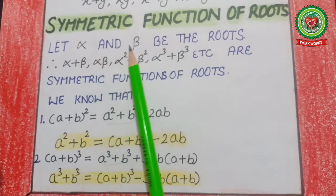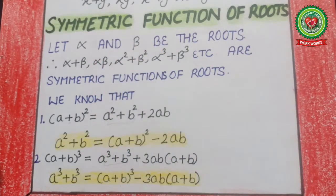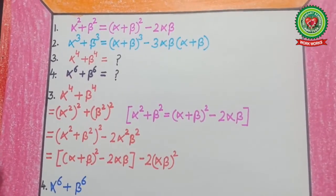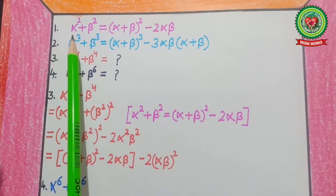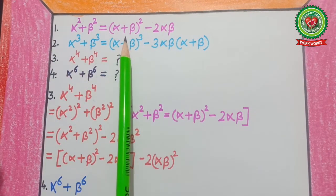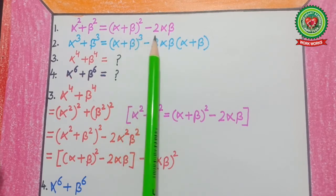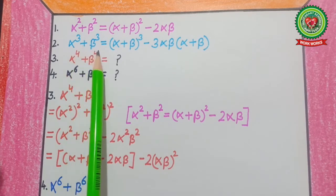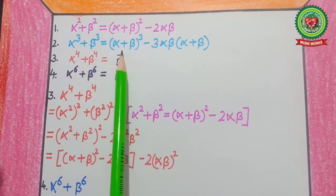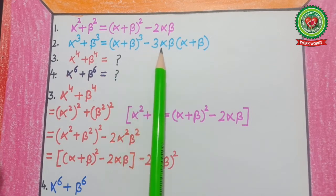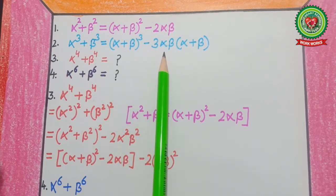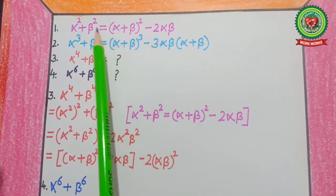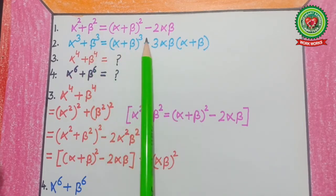Since our roots are alpha and beta, these formulas change into: α²+β² = (α+β)² − 2αβ, and α³+β³ = (α+β)³ − 3αβ(α+β). These are the standard formulas we have done when degree is 2 and 3.